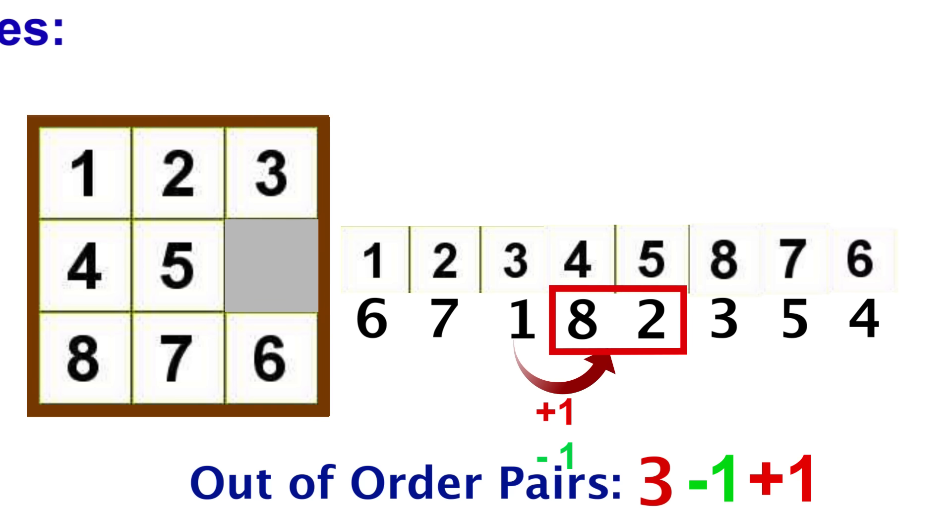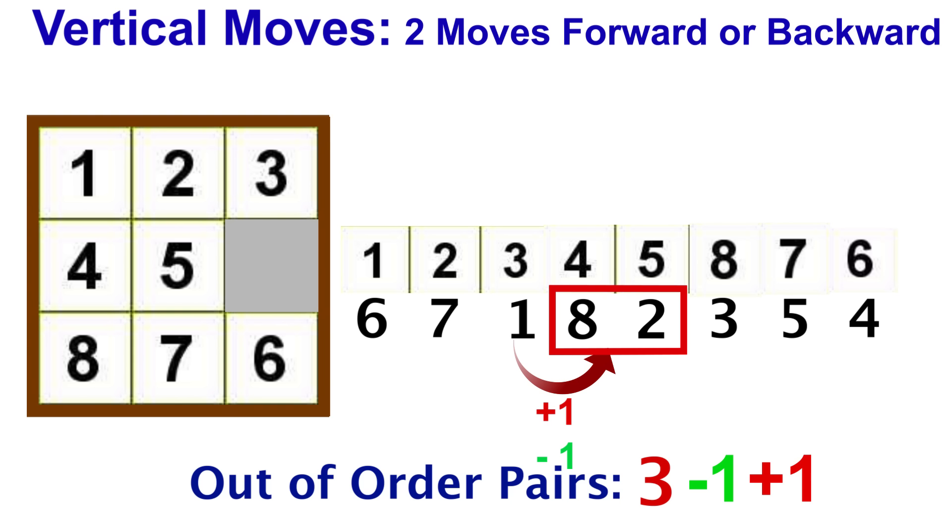But remember when we move vertically, the only way to change the order of everything, tiles move two places over, that's our only option. If each move either increases or decreases the out of order pairs by 1, then after two moves you can either have a change of 2, a change of 0, however it may happen, or a decrease in 2. This is all that a vertical move can do.